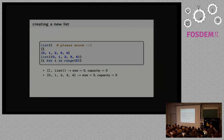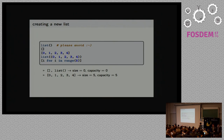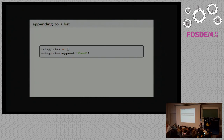So a few ways to create a list — I'm sure most of you know about all of them. When you create an empty list, its size is zero and the capacity of the vector is also zero. When you create a list like 0, 1, 2, 3, 4 and you know the size when you declare it, the size will be five and the capacity will also be five.